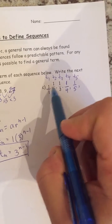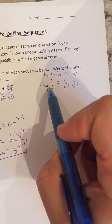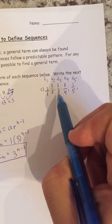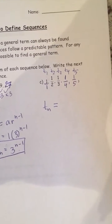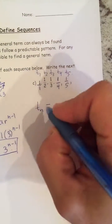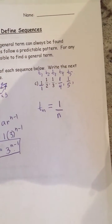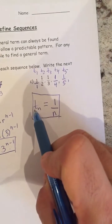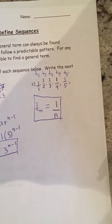There is no arithmetic rule here — to go from 1 to 1/2 you subtract 1/2, but subtracting 1/2 again doesn't give 1/3. There's no geometric pattern either — multiplying 1/2 by 1/2 gives 1/4, not 1/3. So there's another pattern: the denominator equals the term number. The general term formula is T(n) = 1/n. Term 5 is 1/5, term 6 is 1/6, and so on.